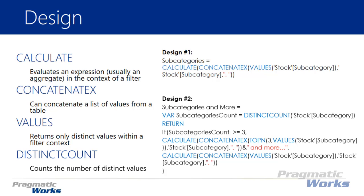What he suggests is creating a variable — VAR — called subcategories count, which is set to a distinct count of all the subcategories. You don't necessarily have to use a variable, but it makes the calculation cleaner. Then we use RETURN with an IF statement: if the subcategories count is greater than or equal to three, we only return the top three subcategories using a TOPN function.